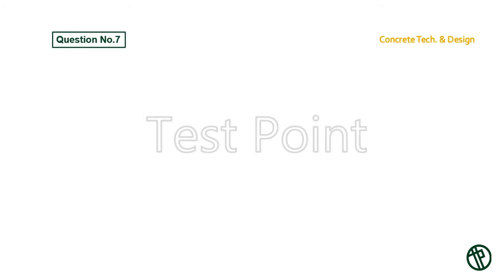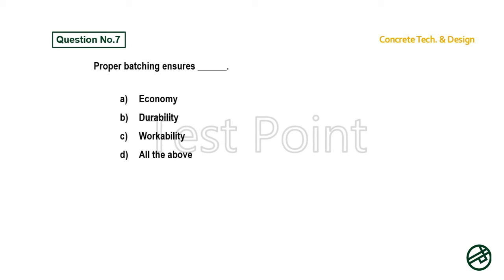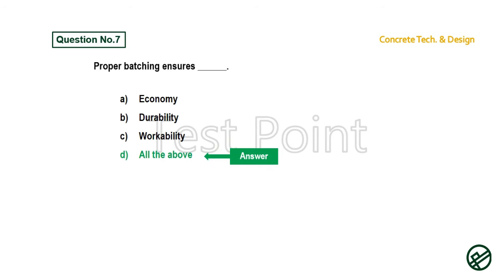Question number 7: Proper batching ensures — Option A: Economy. Option B: Durability. Option C: Workability. Option D: All the above. Answer is Option D: All the above.